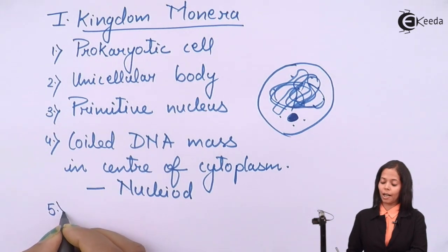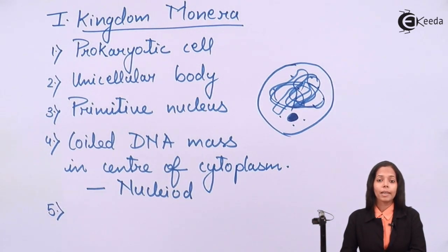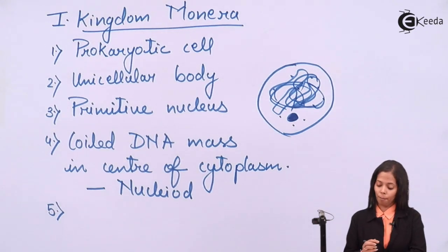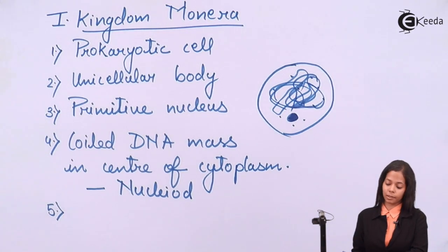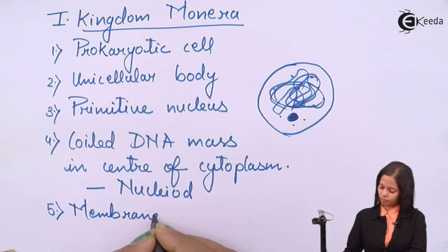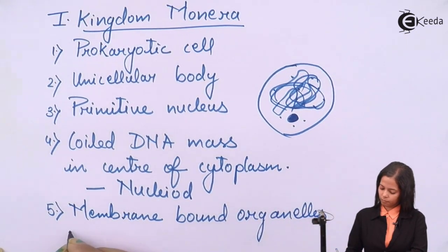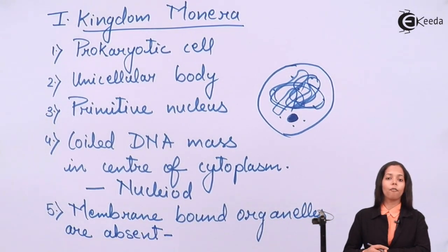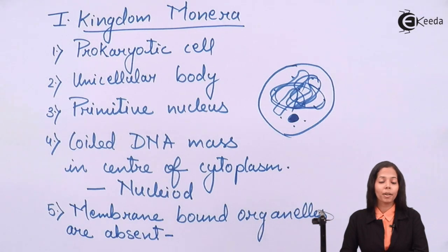The next features regarding Monera is they don't have membrane bound organelles. Membrane bound organelles are absent. Now which organelles are called as membrane bound? Mitochondria, endoplasmic reticulum, chloroplasts, golgi apparatus, lysosomes, etc. All these things are absent except ribosome.